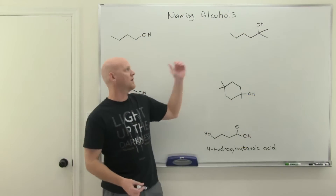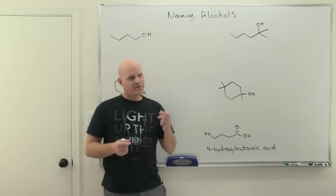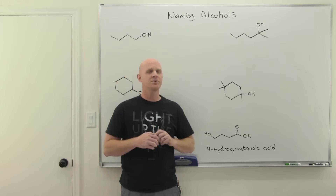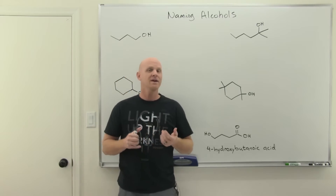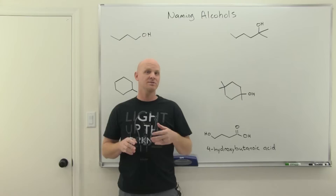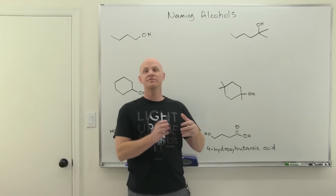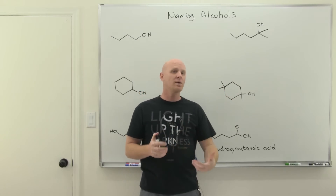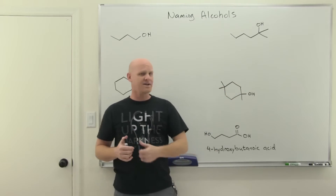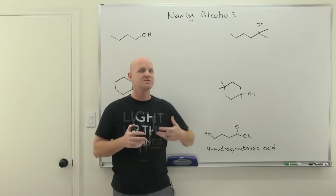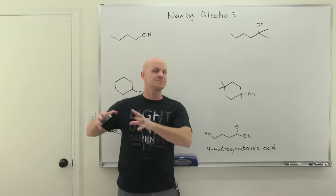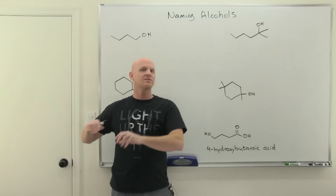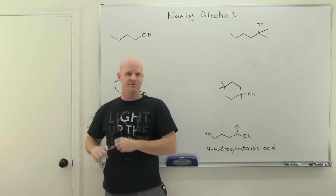When naming alcohols, you have two major scenarios. Either the alcohol is the highest priority functional group in your molecule, in which case it'll be named using a suffix on the parent chain at the very end of the name, or it's not the highest priority functional group, in which case it'll be named as a substituent with a prefix at the beginning of the name.